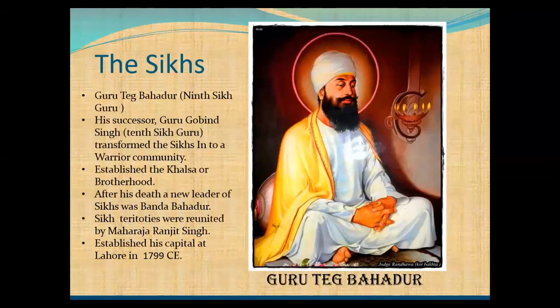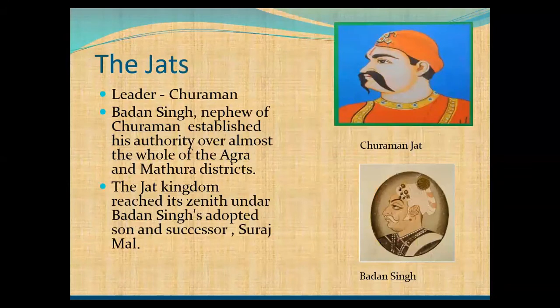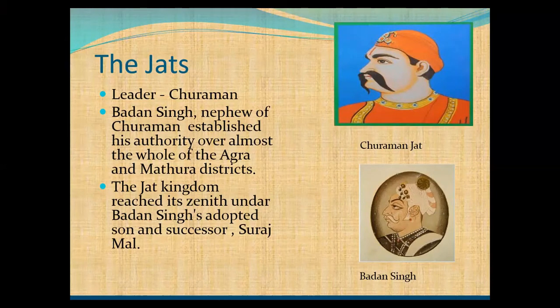The next regional power is the Jats. The leader Churaman gave the Jats an opportunity to exploit the situation. They consolidated their power and established themselves as an independent entity. Under the leadership of Churaman, the Jats acquired control over territories situated to the west of Delhi. Then Badan Singh, a nephew of Churaman, established his authority over almost the whole of Agra and Mathura districts. The Jat kingdom reached its zenith under Badan Singh's adopted son and successor, Surajmal.